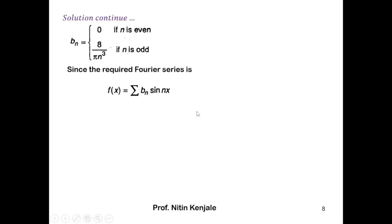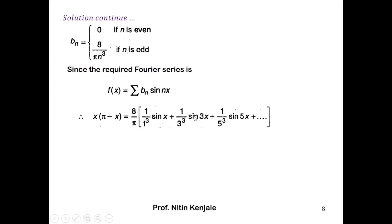Now we substitute the value of b_n into the required Fourier series. After substituting, the half range Fourier sine series of f(x) is obtained. I hope you understood what the half range Fourier sine and cosine series are.